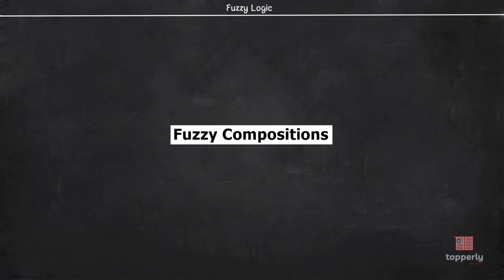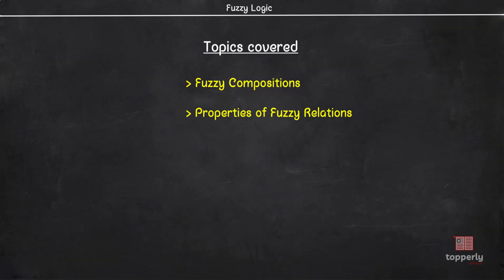Hey everyone, welcome back to Fuzzy Logic Lectures. In the last video, we learned about Fuzzy Cartesian products, Fuzzy Relations, and operations on Fuzzy Relations. Continuing from there, in this lecture we will learn about Fuzzy Compositions and properties satisfied by Fuzzy Relations. We will also see solved examples on these topics to understand them better. So let's start our lecture.